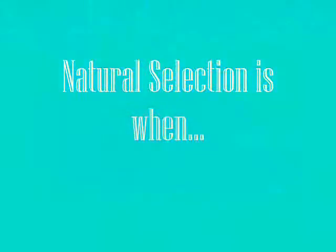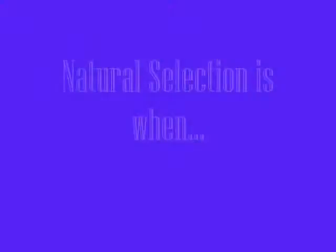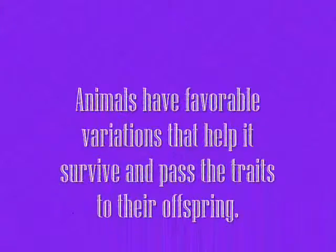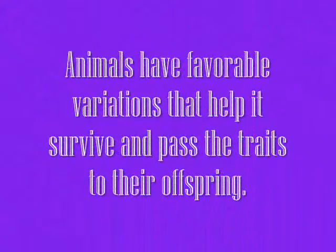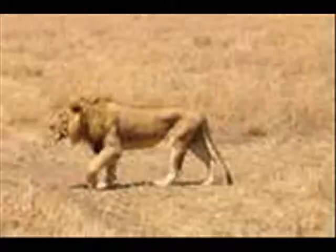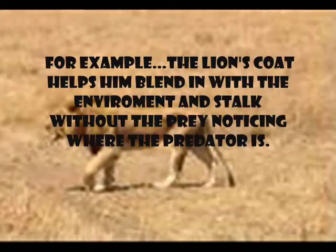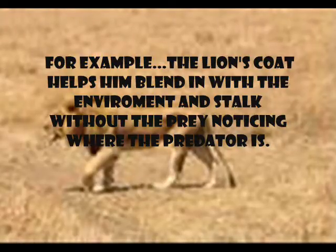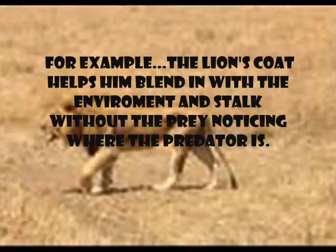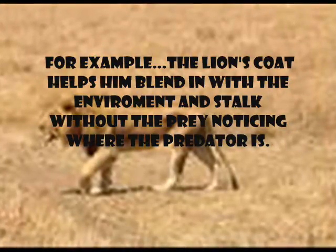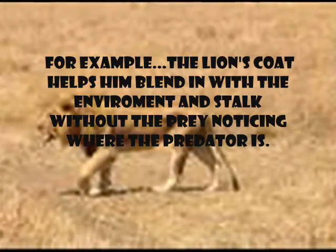Natural Selection is when animals have variable variations that help them survive and pass the traits to their offspring. For example, the lion's coat helps them blend in with the environment and stalk without the prey noticing where the predator is.